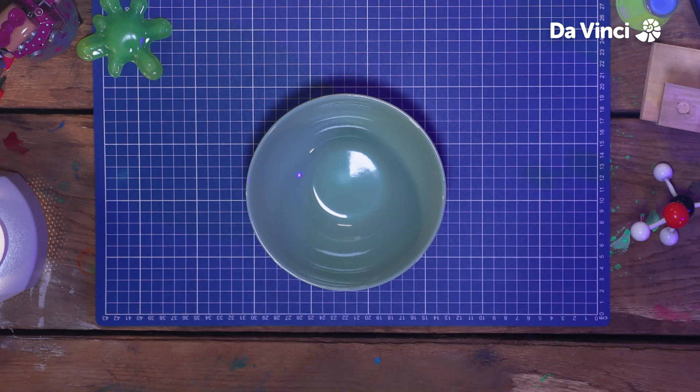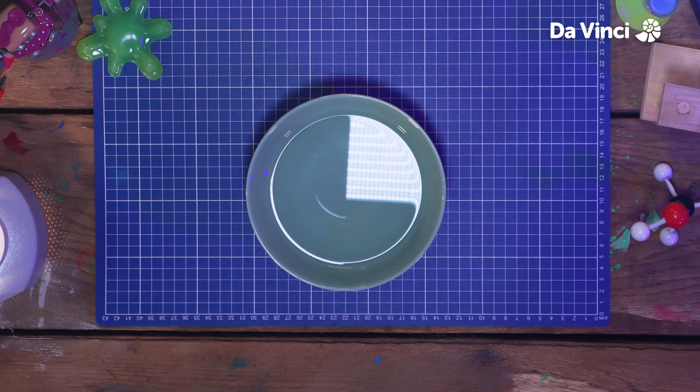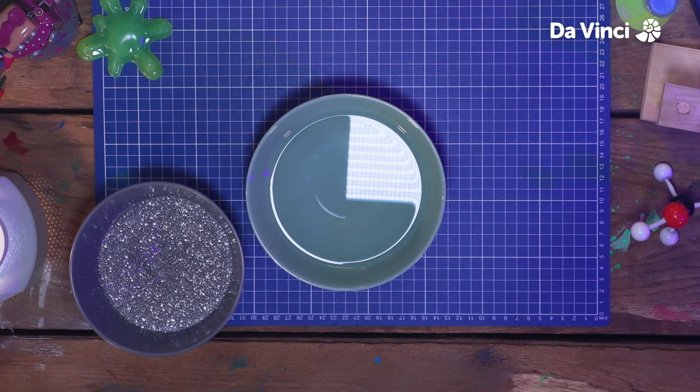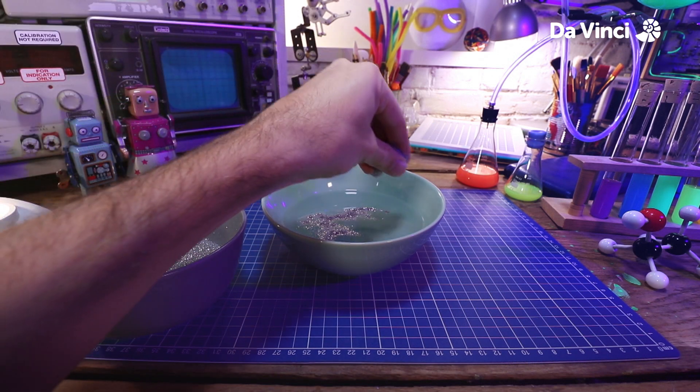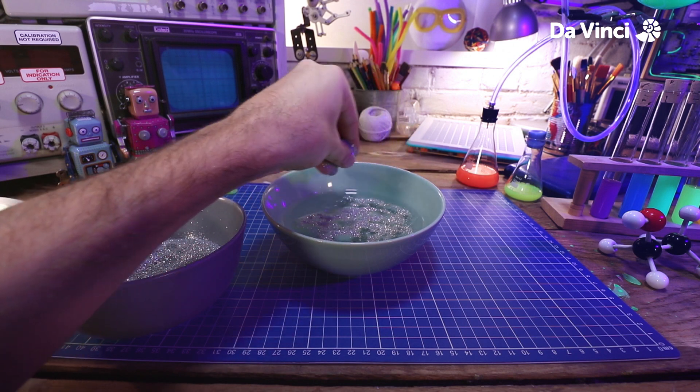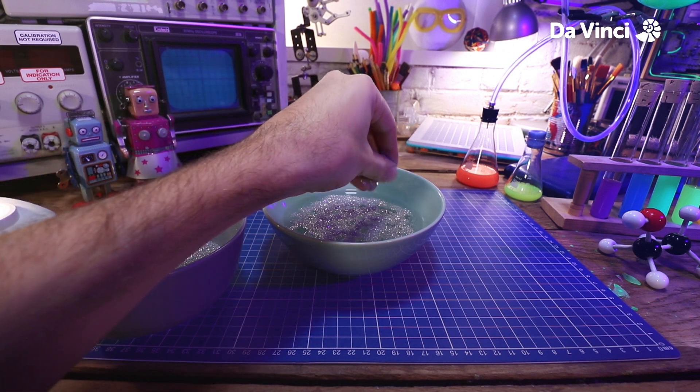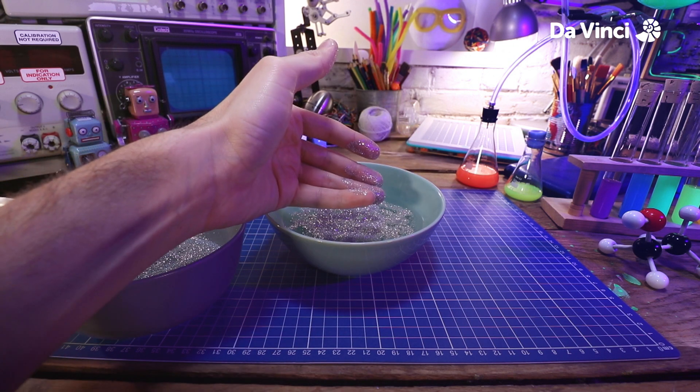The next part of the lava lamp we need to look at is the oil and the water. I'm going to use some glitter to help show off how it works. Taking just a little bit, I'm going to spread this out onto the water's surface. Ooh, sparkly.